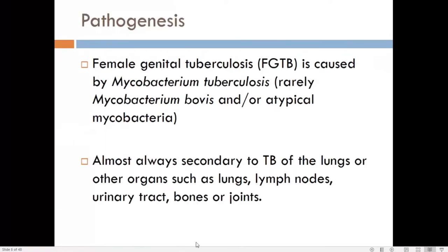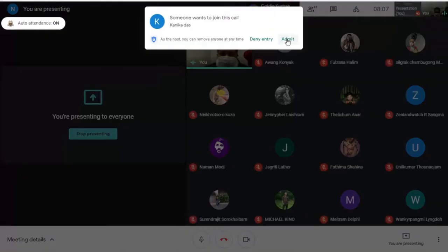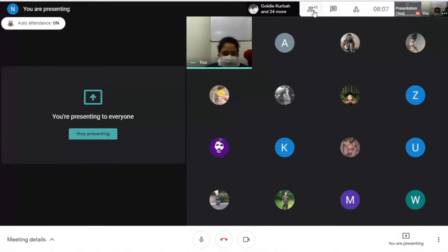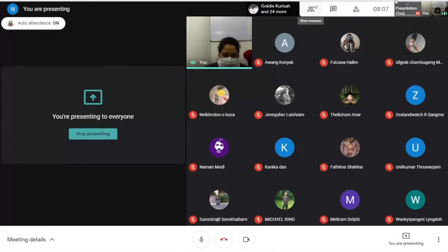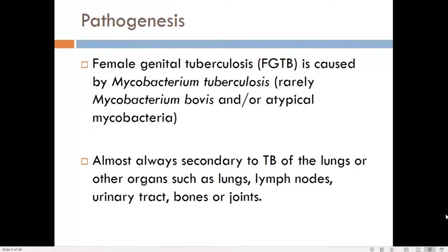Regarding pathogenesis, genital tuberculosis is caused by Mycobacterium tuberculosis in about 90 to 95 percent of cases. In 5 to 10 percent of cases, it could be Mycobacterium bovis or some atypical mycobacterium.